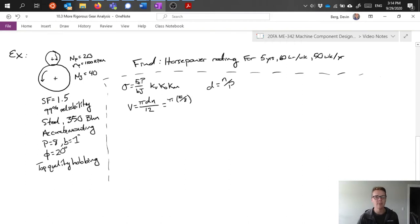We can plug that in. We have n of 20 over p of 8. We're working with the pinion in this case. We actually analyze the pinion because it's the gear of the two in a pair that's most likely to fail. So we have this plugged in for diameter, 1100 rpm over 12. This gives us 720 feet per minute.